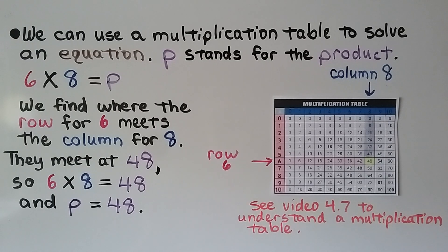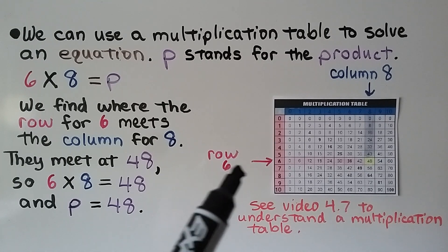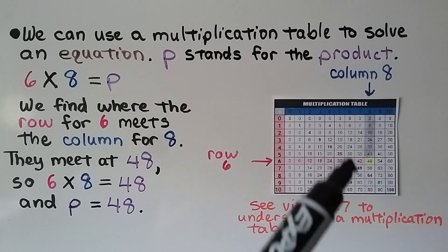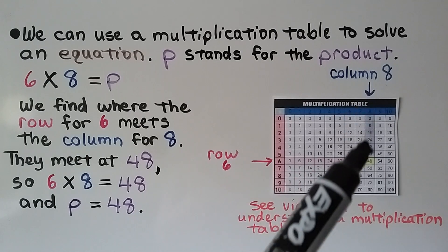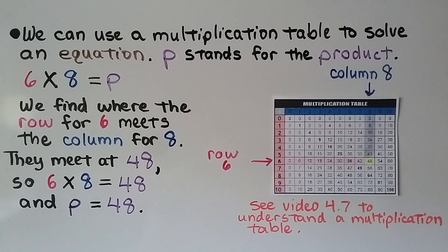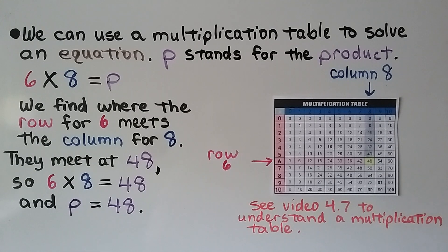We need to find what p is equal to. We find where the row for 6 meets the column for 8, and they meet at 48. So 6 times 8 is equal to 48, which means p is equal to 48.